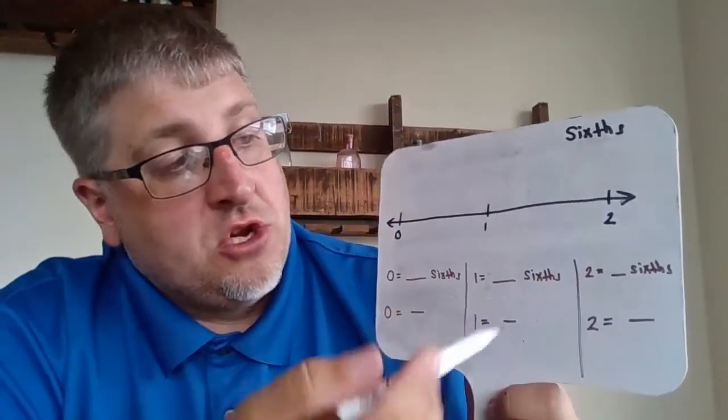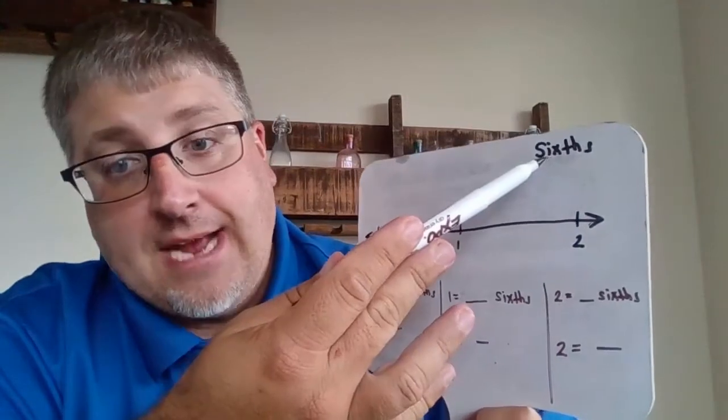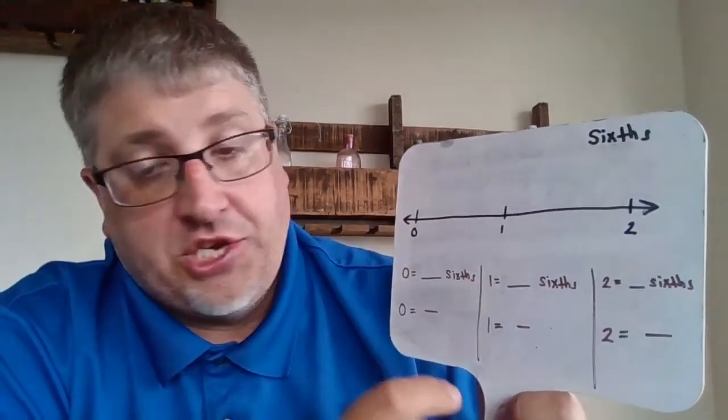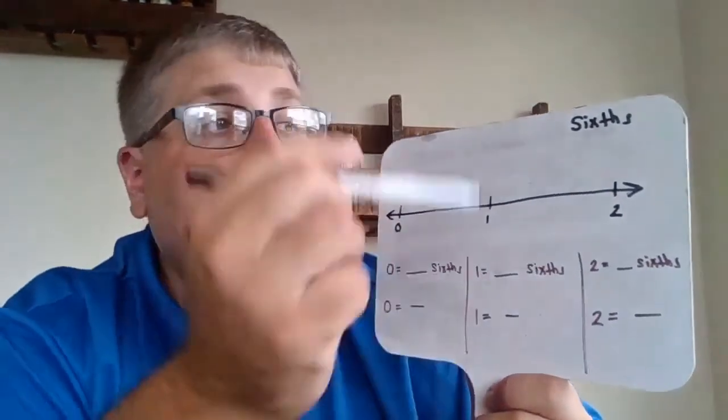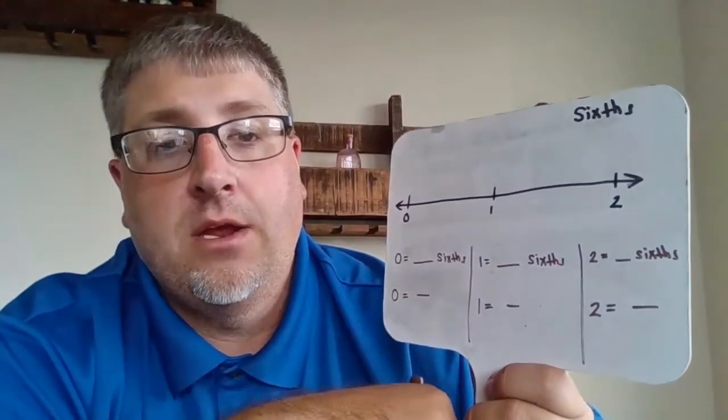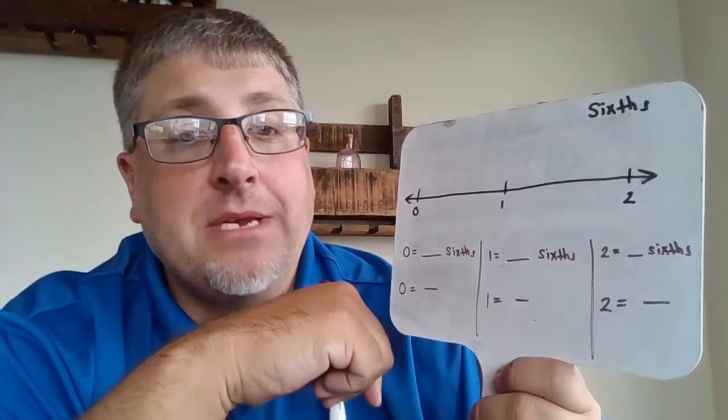First things first, let's take a look at our number line here. We're breaking it down into sixths and then these are the questions that we are going to answer. The important thing to understand is sixths. We have to break this into six pieces.